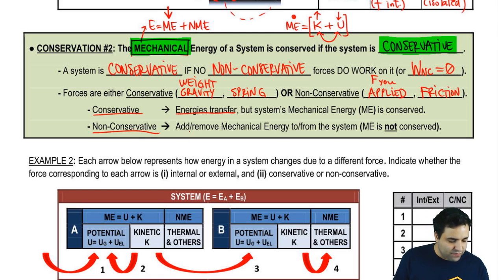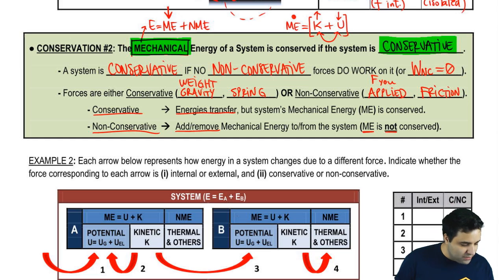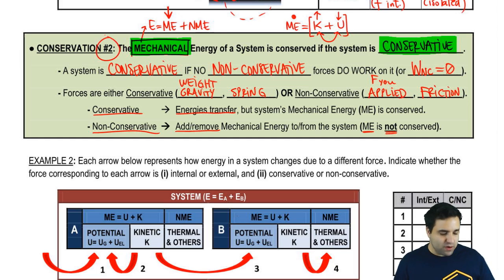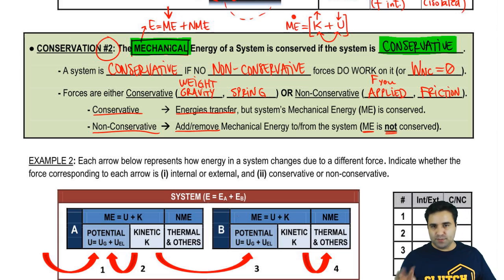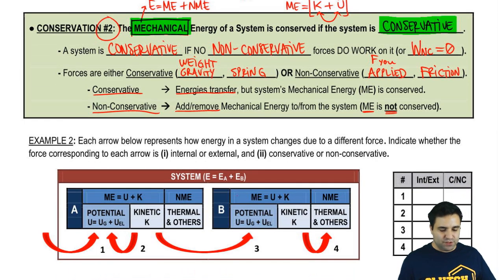If you have non-conservative forces, they will add or remove the total amount of mechanical energy from the system. So the total amount of mechanical energy is not conserved because the number changed. This rule is more important than the other, but you should probably know both — especially if your professor likes conceptual questions, something like this can show up in multiple choice.